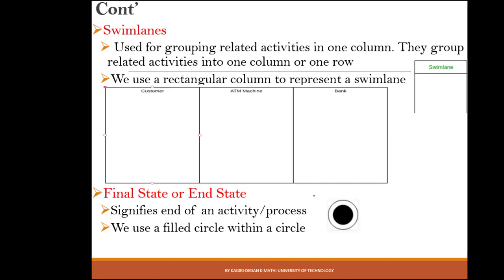A swimlane is used when you want to group related activities into one column so you can tell which activities belong to which object or actor. A rectangle is used to represent a swimlane. For an ATM scenario with a customer, an ATM machine, and a bank, you organize them using swimlanes with the initiating actor placed farthest to the left.